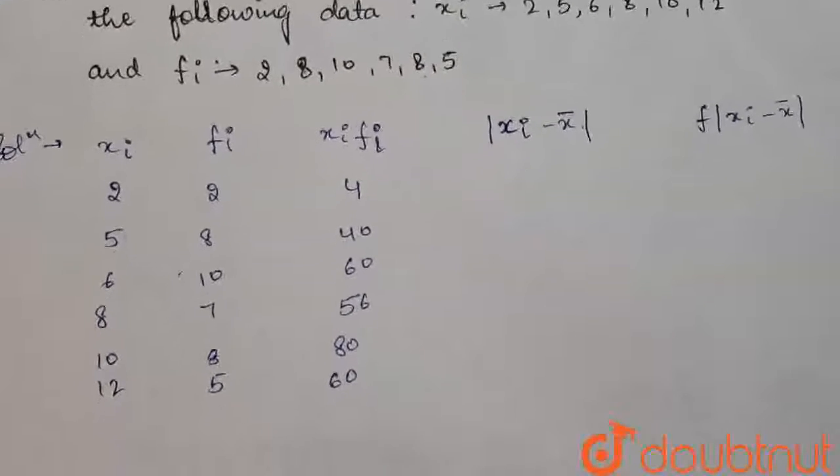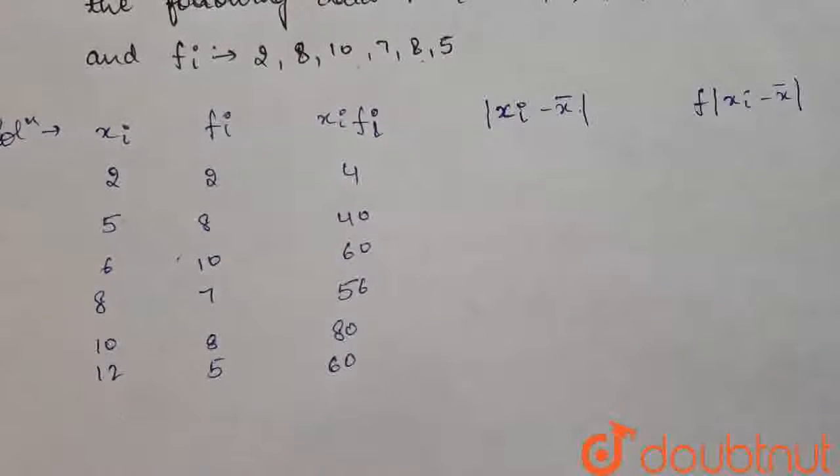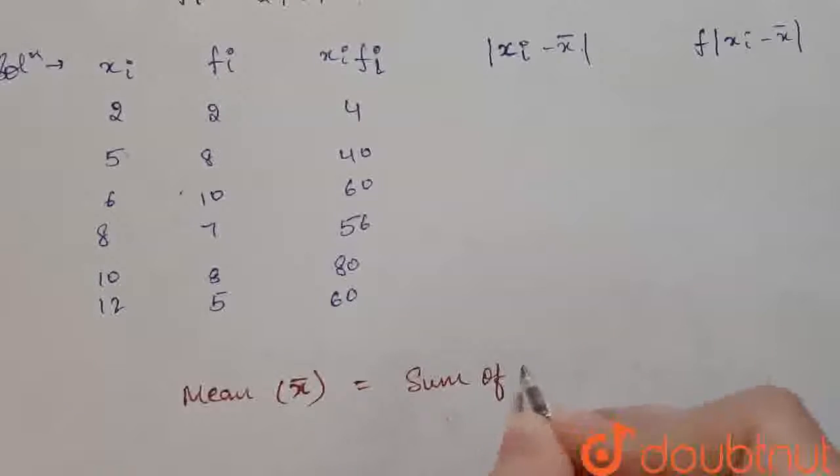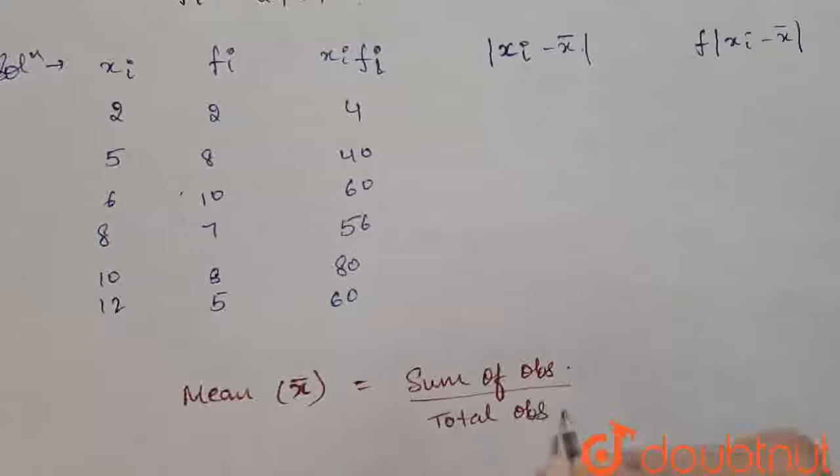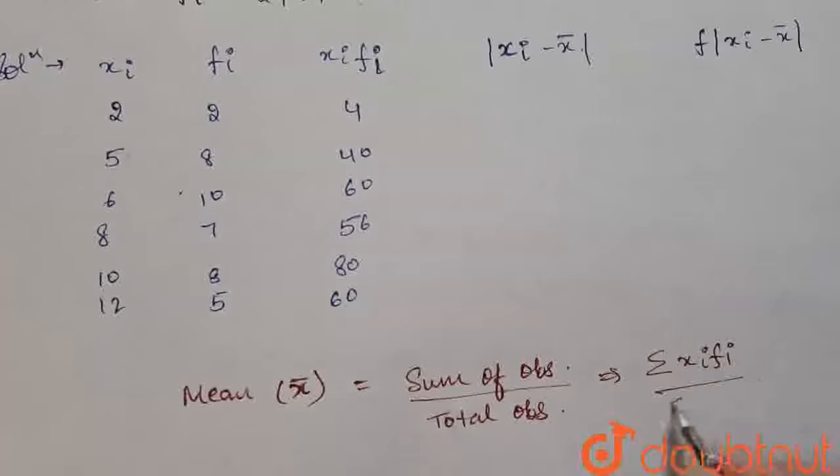Now, for calculating the mean deviation about mean, firstly, we will calculate the mean of this data. So, for calculating mean, what we are going to use, mean x bar is equal to sum of observation upon total observation. Or, we can say that summation of xi fi divided by summation of fi. Fi is frequency, xi are the terms.